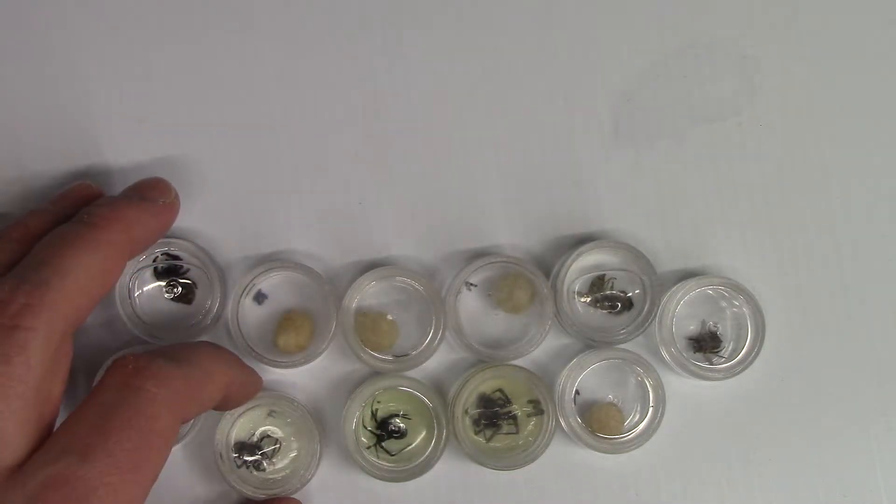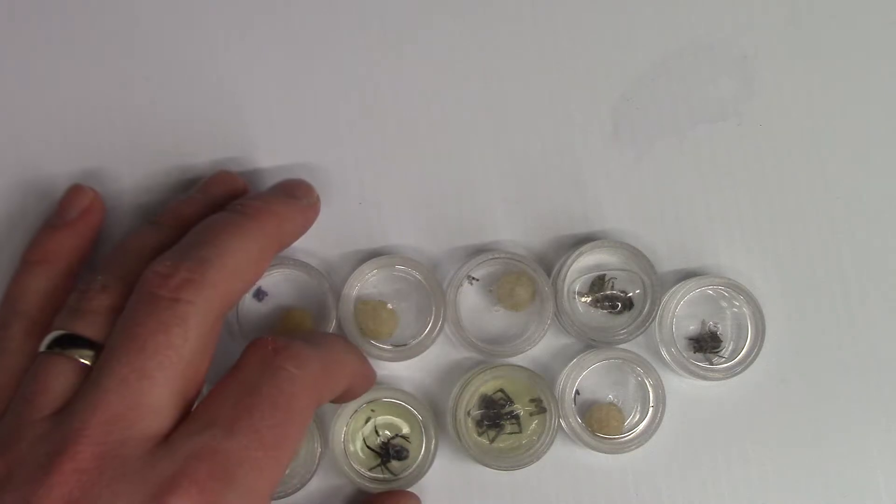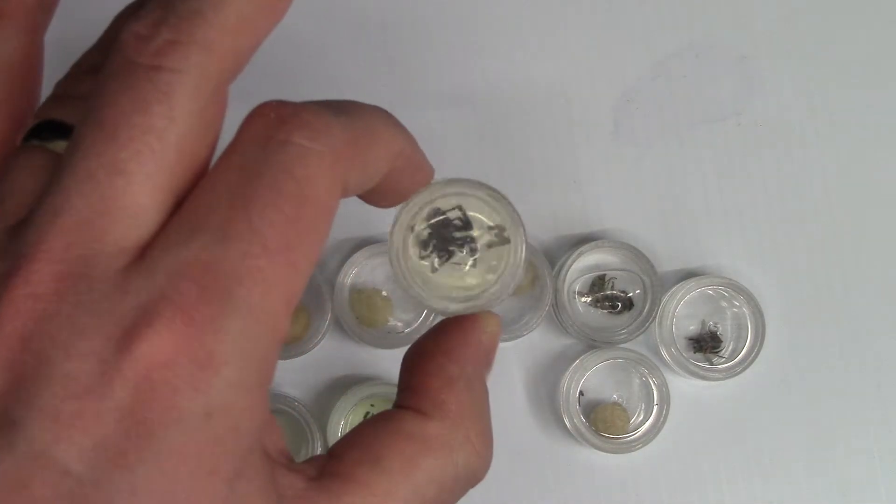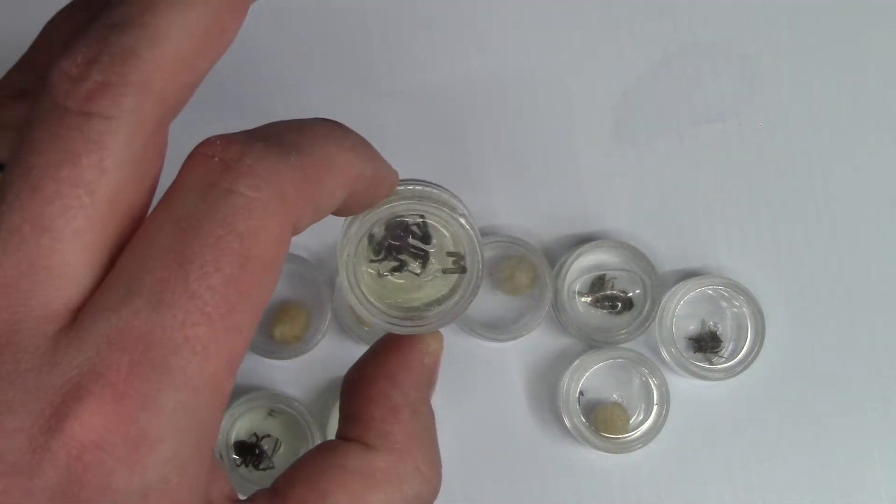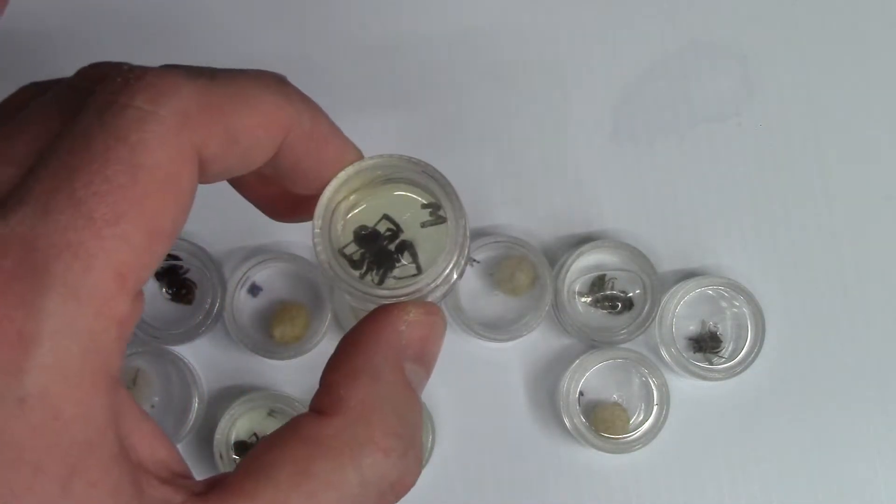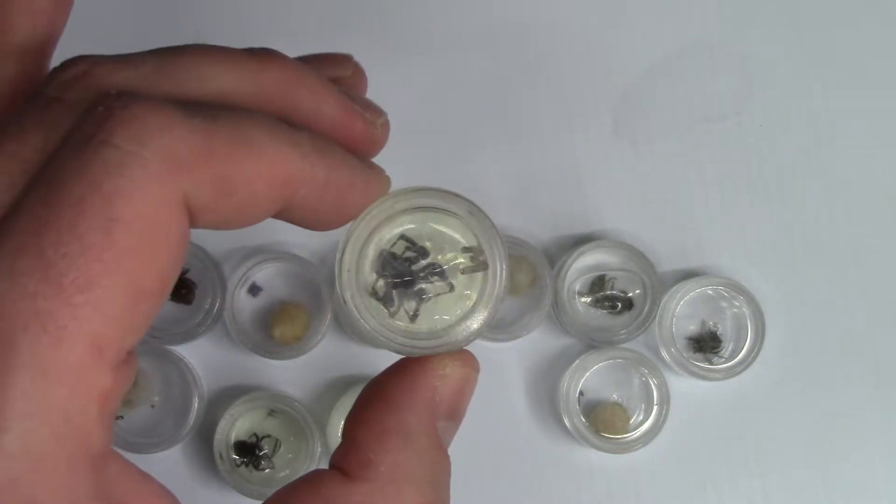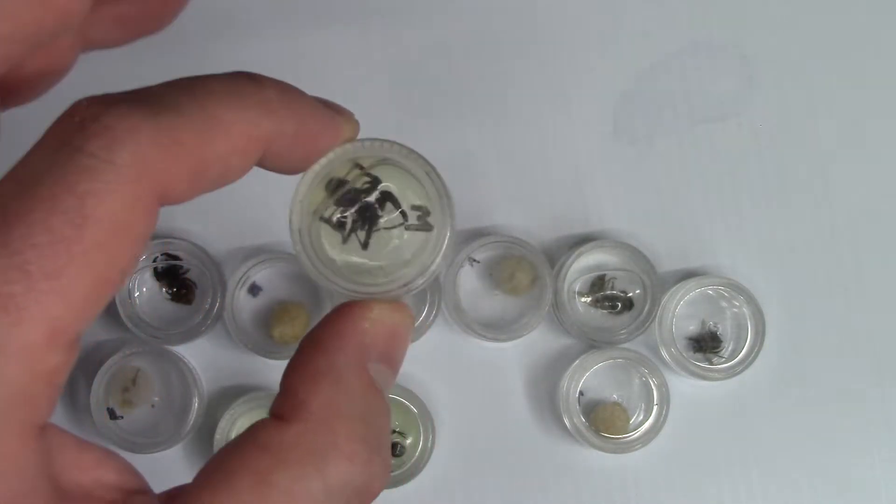And I have some issues with rubbing alcohol. These are black widows that are preserved in rubbing alcohol. Over time, they bleach. You actually lose the color of the abdomen, the red hourglass, which kind of defeats the whole purpose.